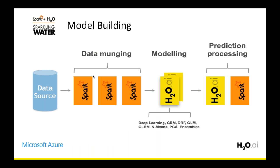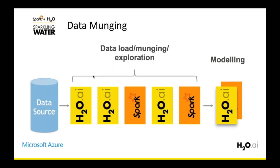What are the use cases for Sparkling Water? One example is model building: ingest data into a Spark DataFrame, do data munging with Spark SQL or PySpark, then call an H2O algorithm for modeling, and combine both into a single Sparkling Water pipeline for prediction. The data munging piece can use both H2O and Spark — H2O has strong munging functions that are extremely fast — so you can write a pipeline that does data load, munge, exploration, and then calls H2O or Spark for modeling.